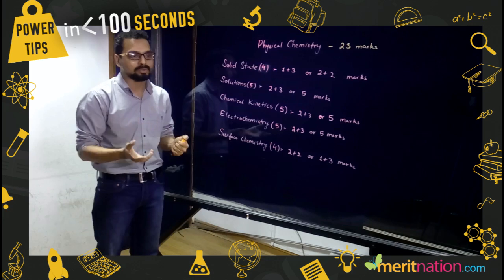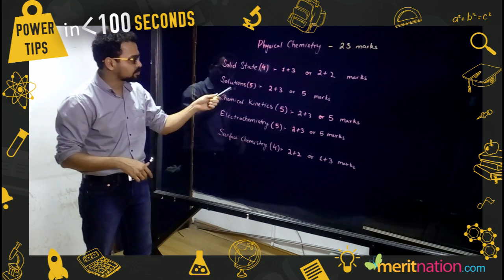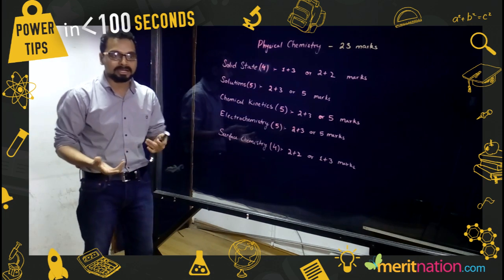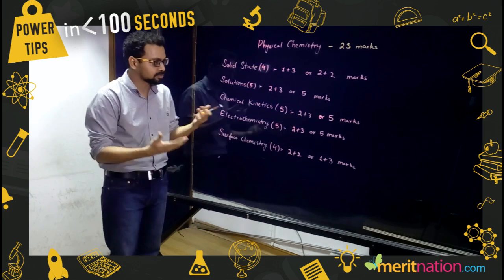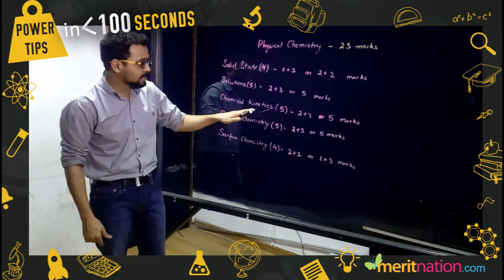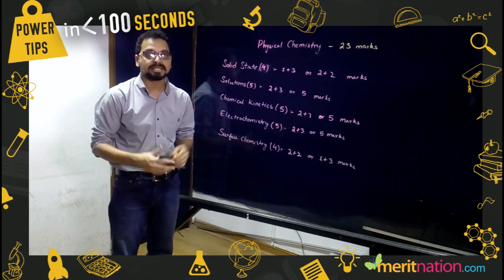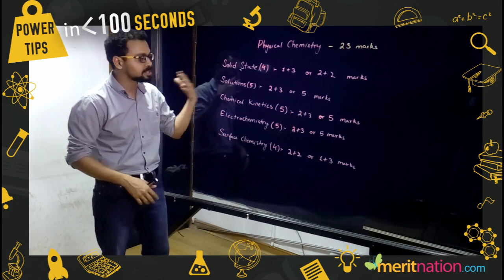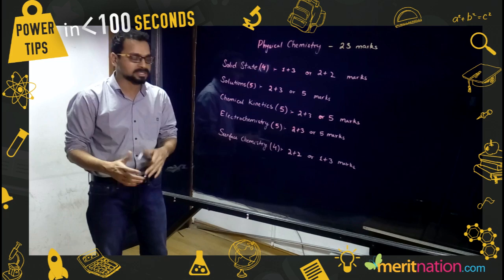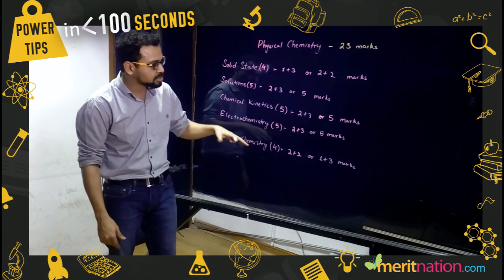In case of solutions, the molarity and molality questions, the strength of solutions, that is something that is important. Chemical kinetics - the first order rate kinetics and the Arrhenius equation, that is something that CBSE would always give you and you can easily score marks in them.